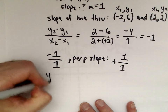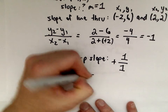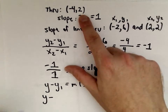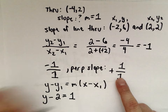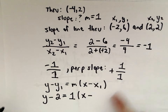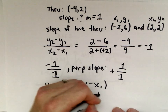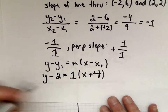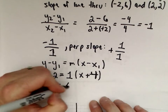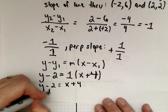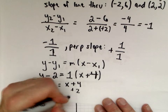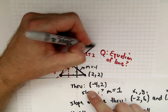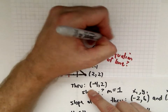Using the point-slope formula: y minus y₁ equals m times x minus x₁. We have y minus 2 equals 1 times x minus negative 4, which simplifies to y minus 2 equals x plus 4. Adding 2 to both sides gives y equals x plus 6. So this second altitude is the line y equals x plus 6.